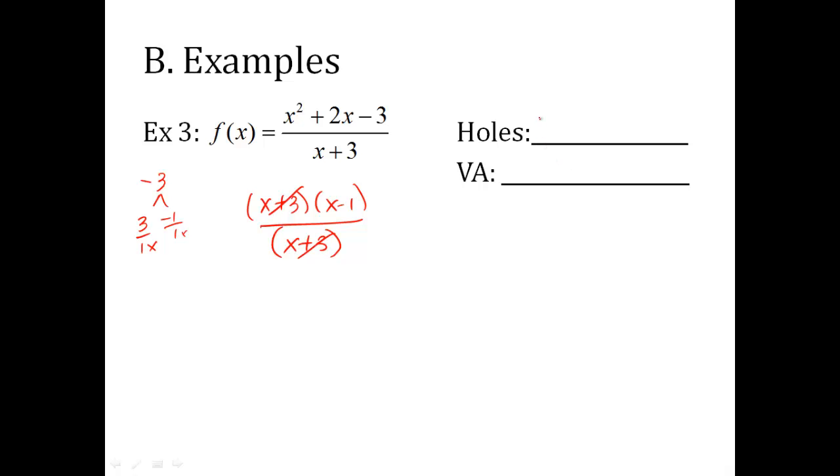Common factor here, so that means there is a hole. And where is this hole located? X plus three equals zero, x is negative three. So the x value is negative three. Now to find the y value, I plug it into whatever part of the equation is left. All that's left is this. So I put negative three minus one over one, which is negative four. There's the coordinate for my hole. Now, vertical asymptote. I don't have any x's in the denominator to solve for x, so I just say none.